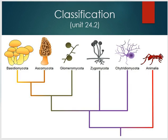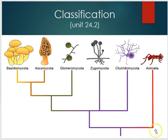So, classification. We're going to look at five different phyla of the kingdom fungi. I put this diagram up here just to remind you again how closely fungi are related to animals — they are distantly related to plants and more closely related to animals. You can see where they share a common ancestor and then the animal kingdom branched off from there, and then we end up with five different groups of fungi.